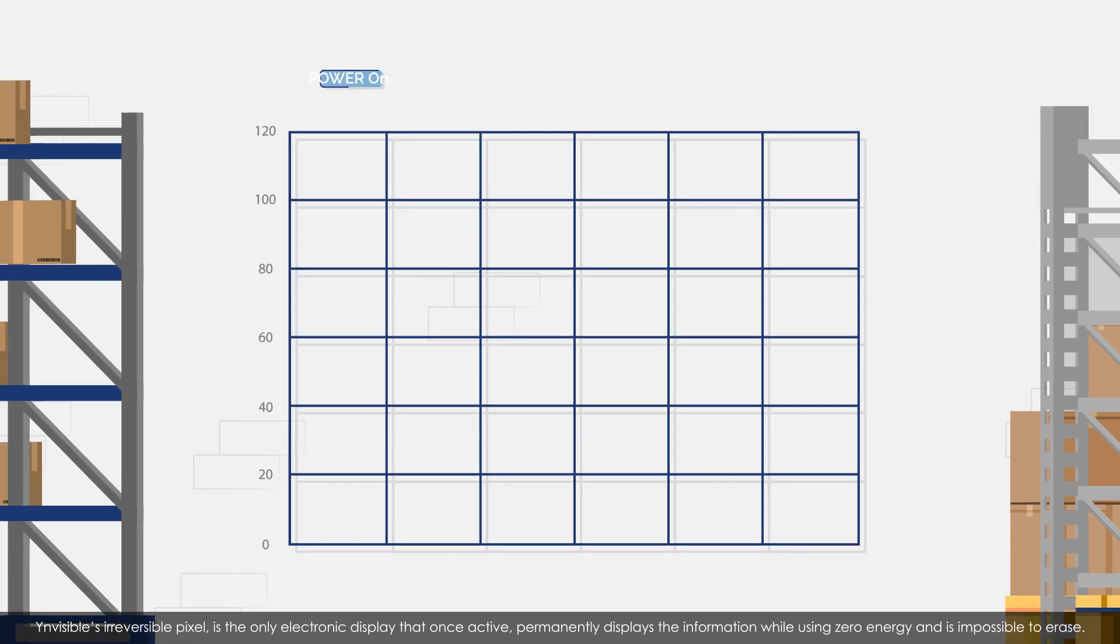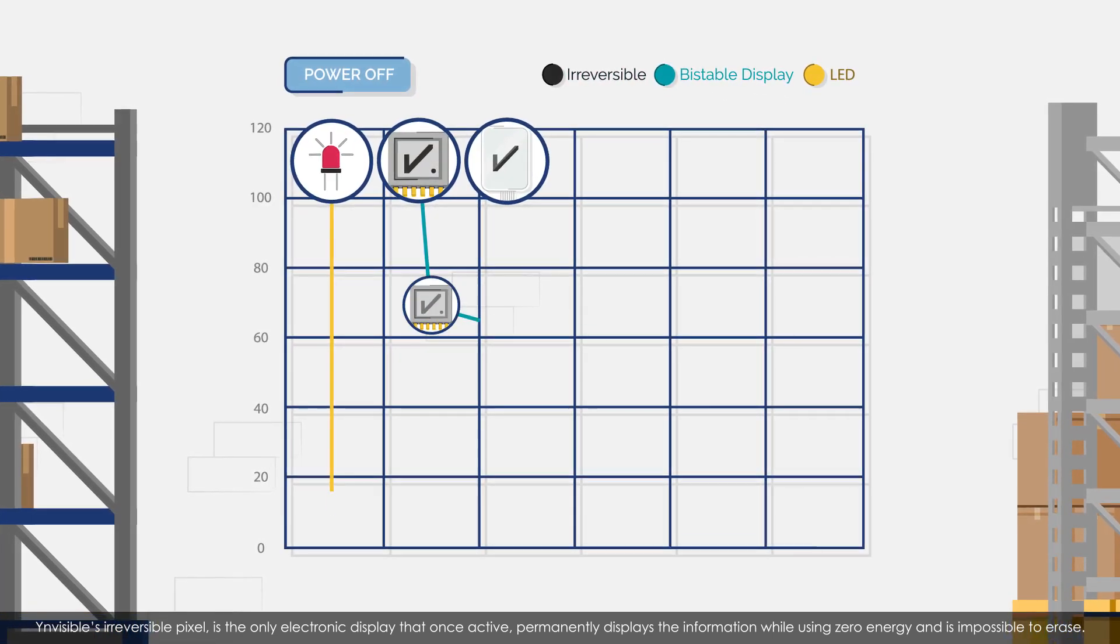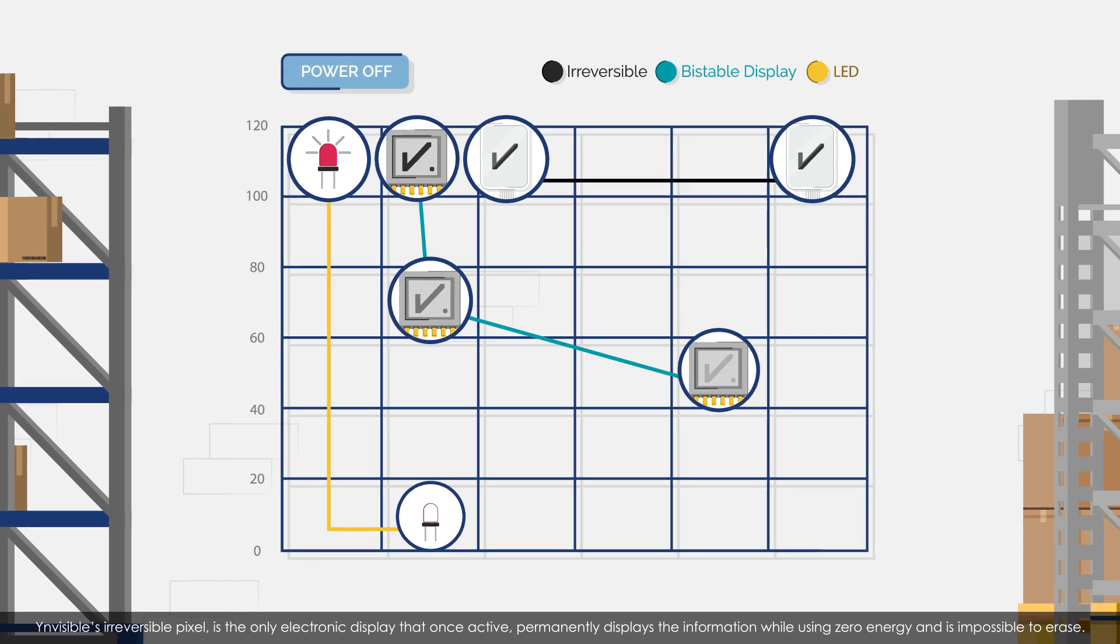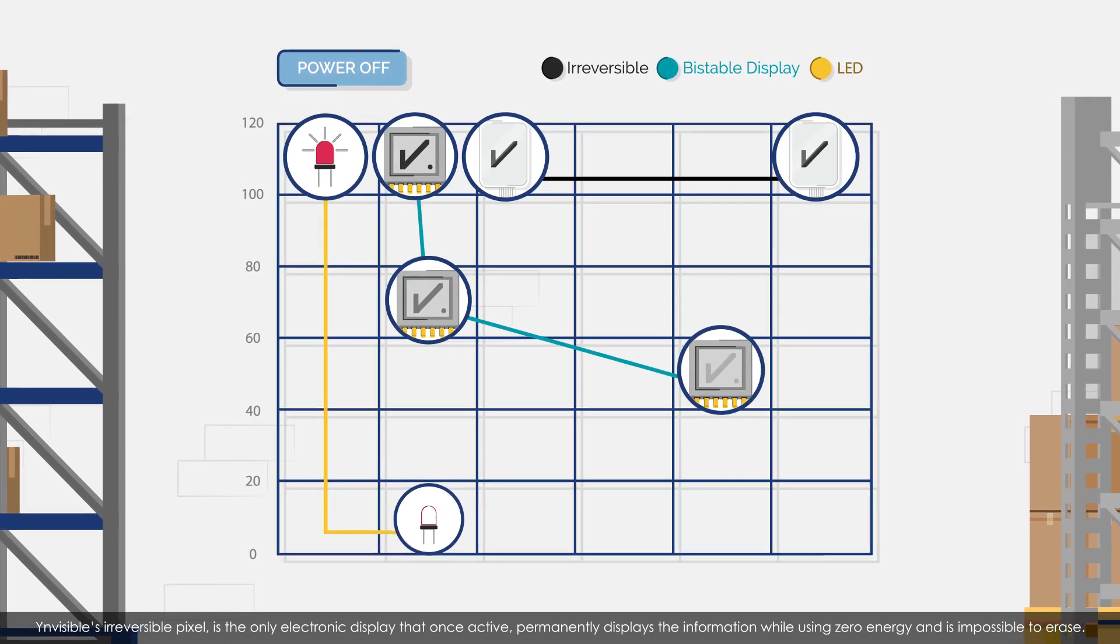Invisible's Irreversible Pixel is the only electronic display that, once active, permanently displays the information while using zero energy and is impossible to erase.